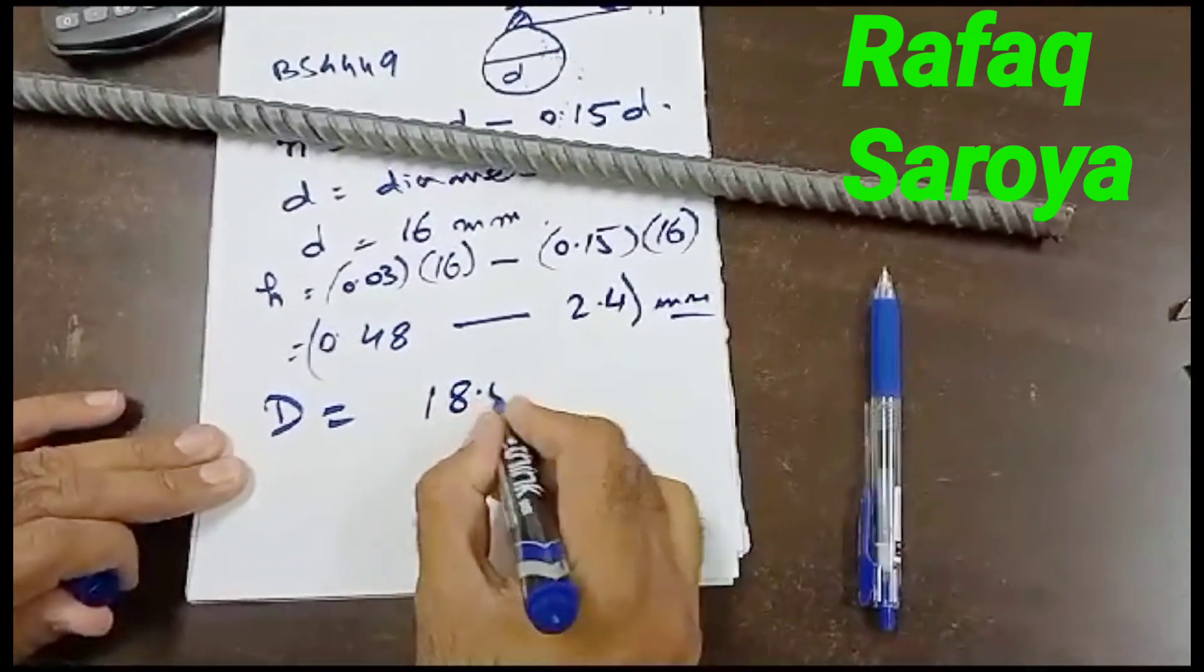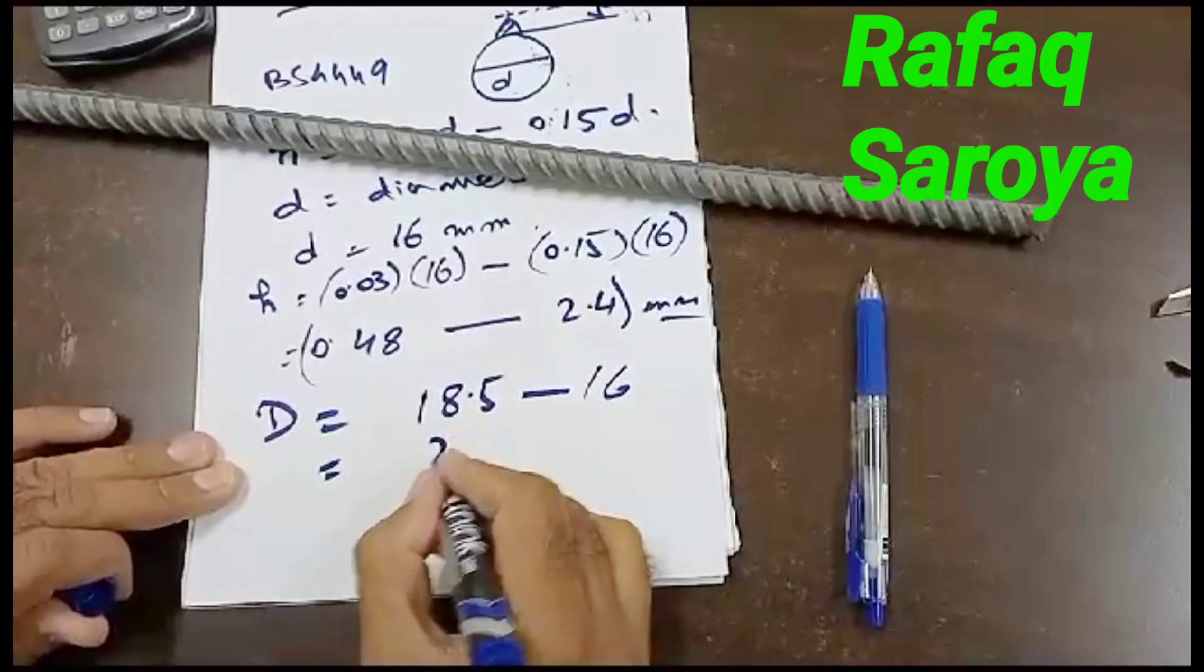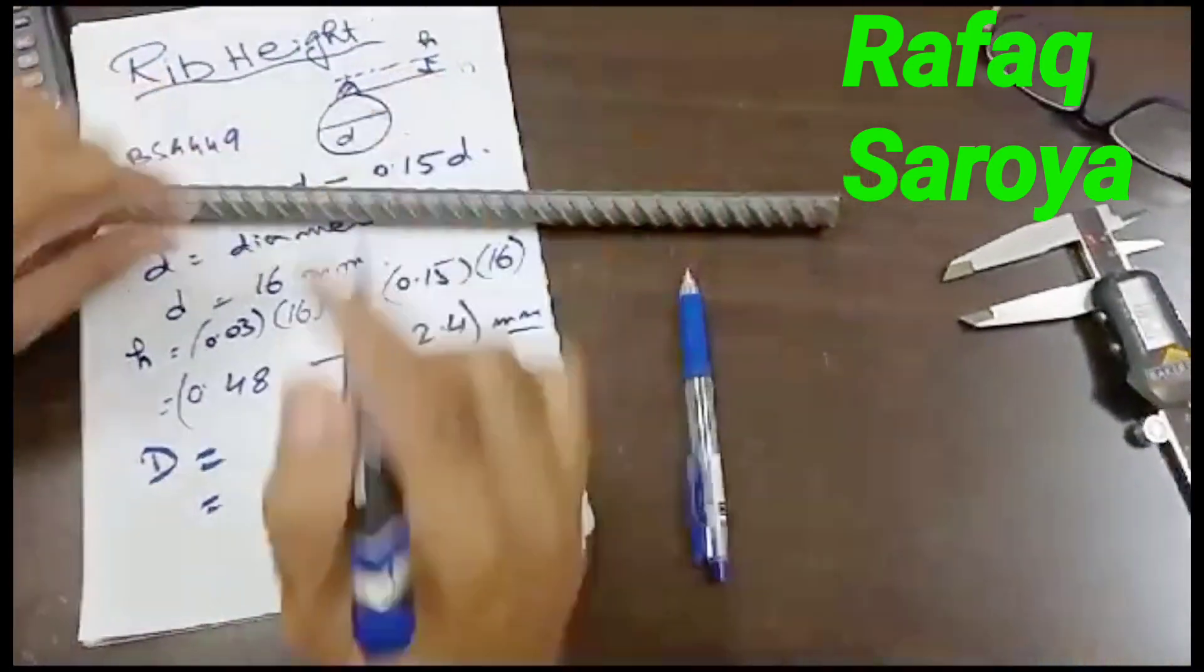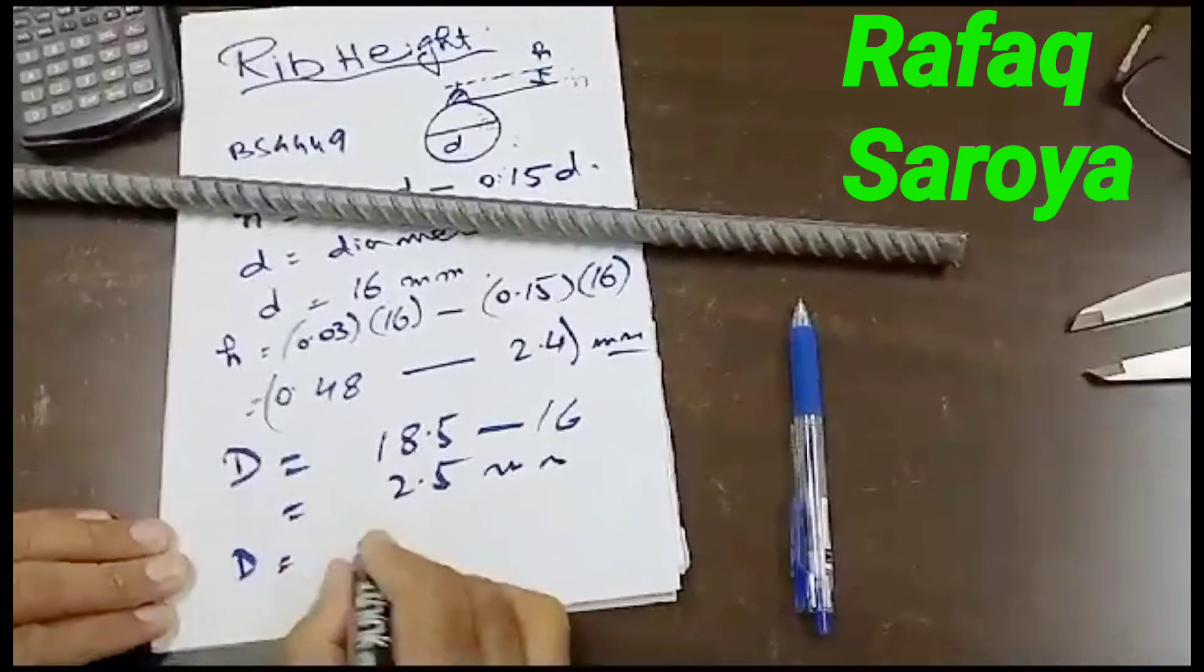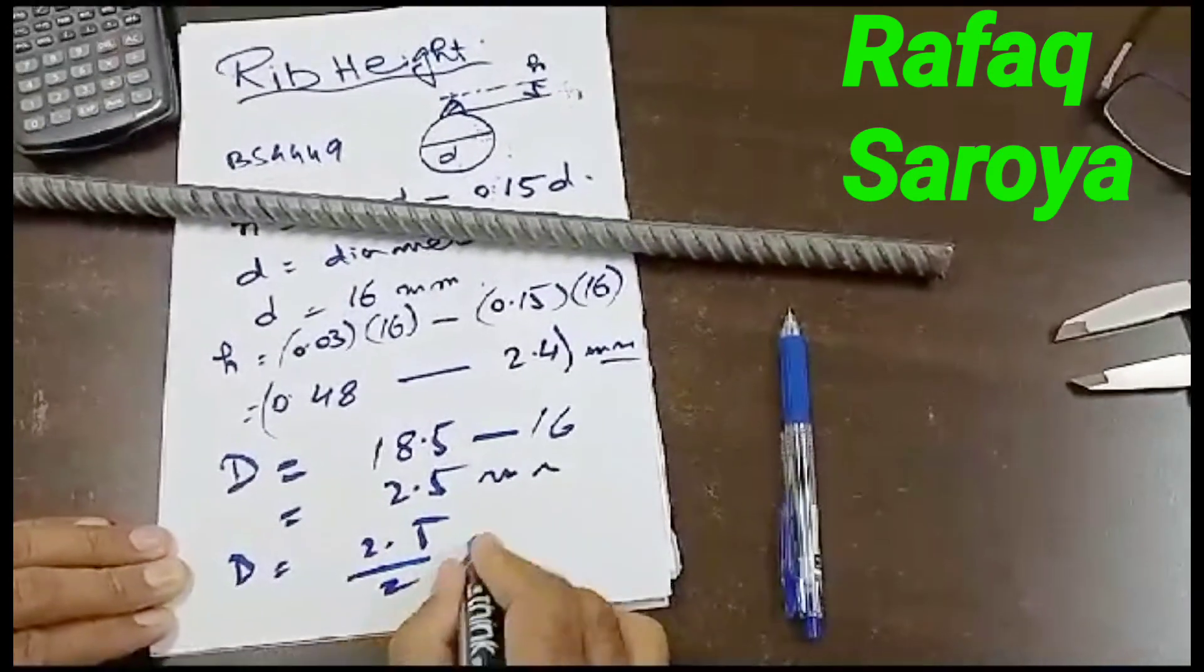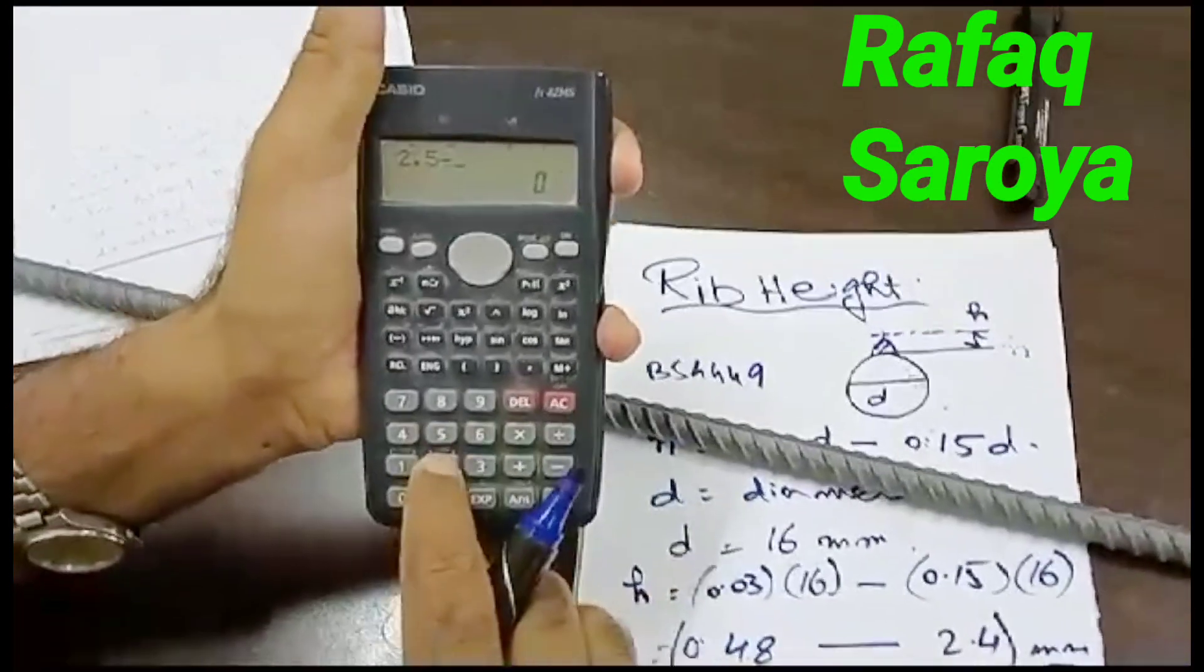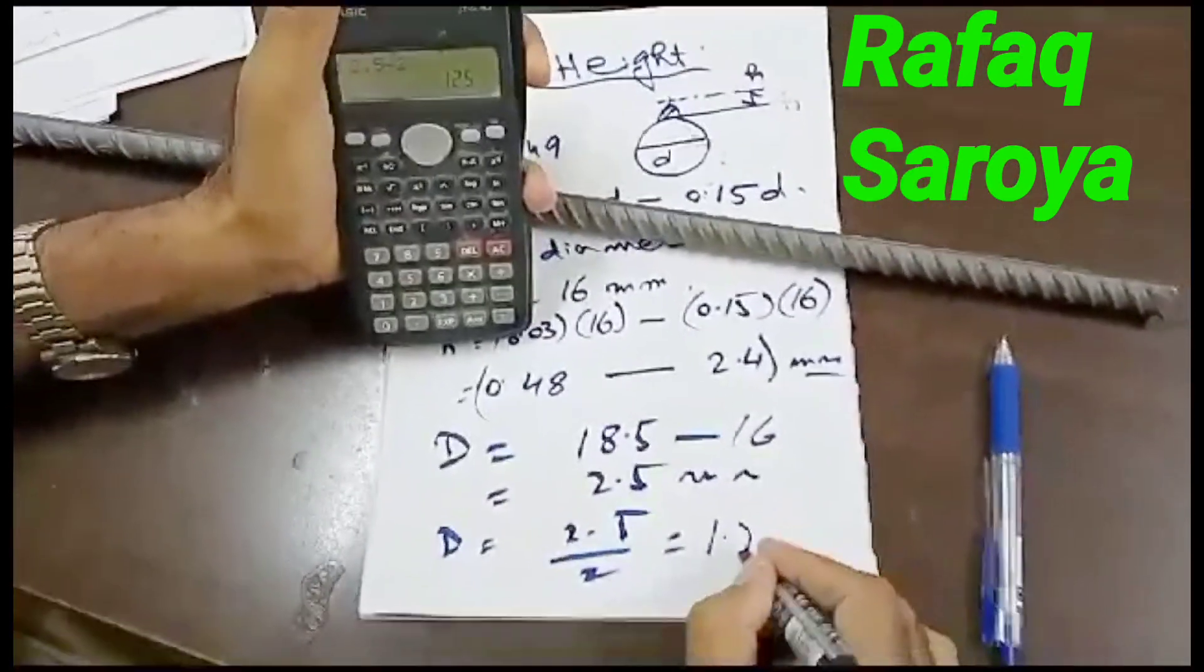18.5 minus 16, so it comes out to be 2.5mm. Because this rib is on both sides, we will divide it by 2. 2.5 divided by 2 equals 1.25mm.